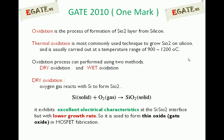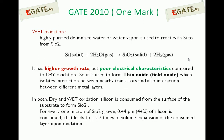In wet oxidation, highly purified deionized water or water vapor is used to react with silicon to form silicon dioxide. The equation is: Si (solid) + 2H₂O (gas) → SiO₂ (solid) + 2H₂ (gas).